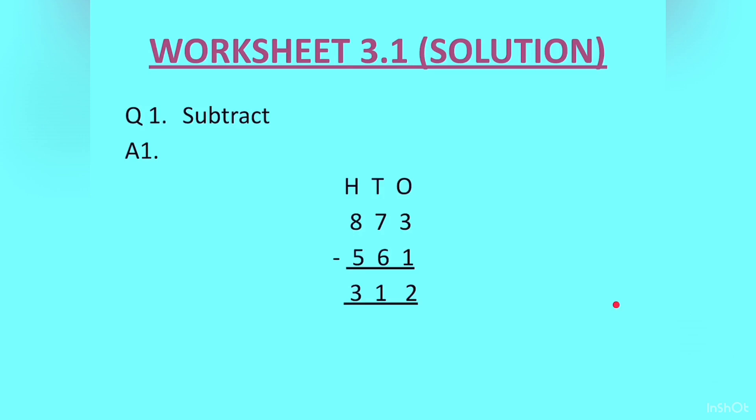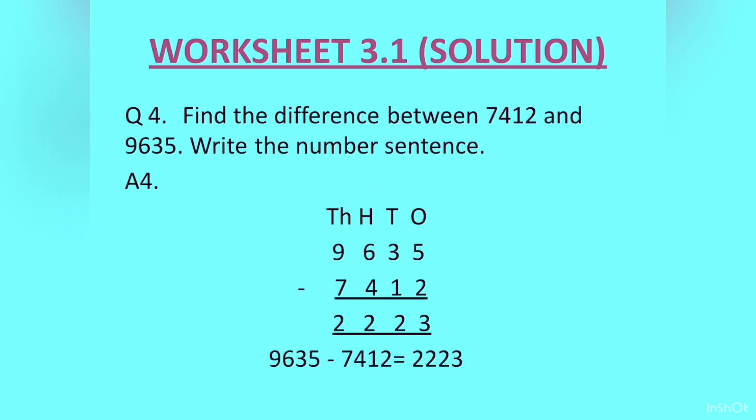The first question: 873 minus 561 gives us the answer as 312. Question 2: 7674 minus 4231 gives us 3443. Question 3: 8419 minus 7118 gives us the answer as 1301. Question 4: Find the difference between 7412 and 9635.